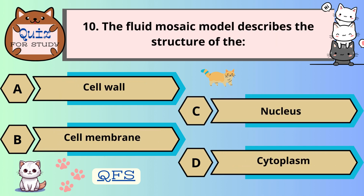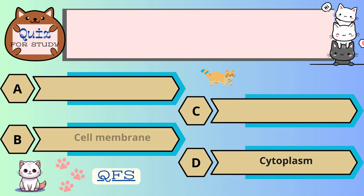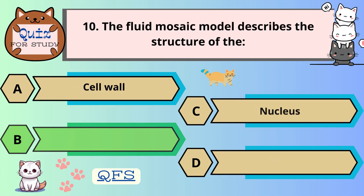Number 10. The fluid mosaic model describes the structure of the — the correct answer is B. Cell membrane.